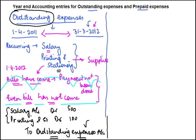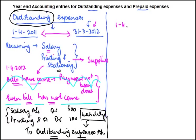So an outstanding expense when provided is debited to the relevant expense head and credited to the outstanding expenses account. This is a liability and it is shown in the balance sheet. Now let's talk about prepaid expenses.